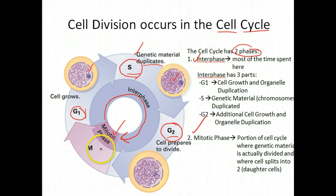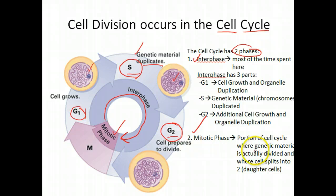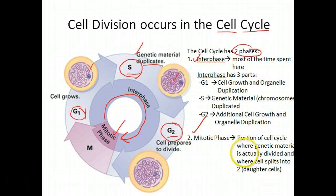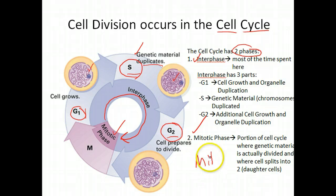The second phase is the mitotic phase. The mitotic phase is the part of the cell cycle where genetic material — remember, we just duplicated all that DNA — now needs to be portioned out. If we're going to split into two separate cells, we need to portion out that genetic material equally so that the two new cells will have equal amounts, full complements of DNA. Mitosis is the part where you essentially divide your genetic material.